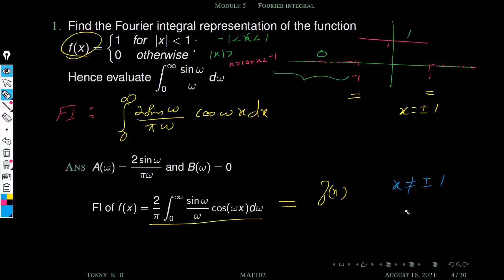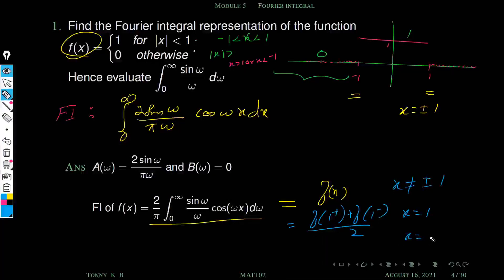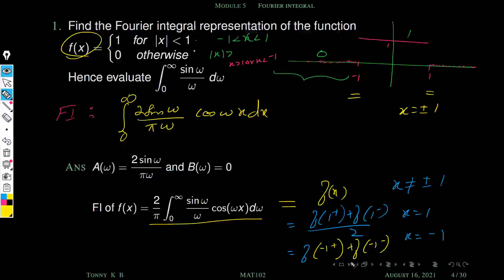At x = 1 the integral value equals [f(1⁺) + f(1⁻)] / 2. At x = −1 the function also has a discontinuity, so we take the average: [f(−1⁺) + f(−1⁻)] / 2, where f(−1⁺) is the right-hand limit at x = −1 and f(−1⁻) is the left-hand limit at x = −1.